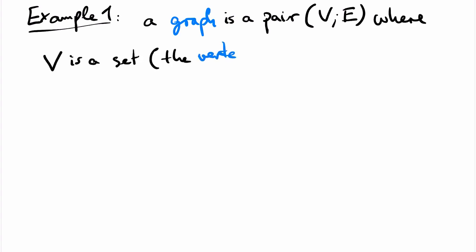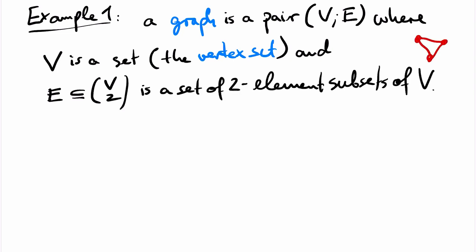Today we have two running examples of special types of structures. A graph consists of a set, also called the vertex set, and a set of edges, which are two element subsets of the vertex set. So graphs can be nicely visualized as on the right.